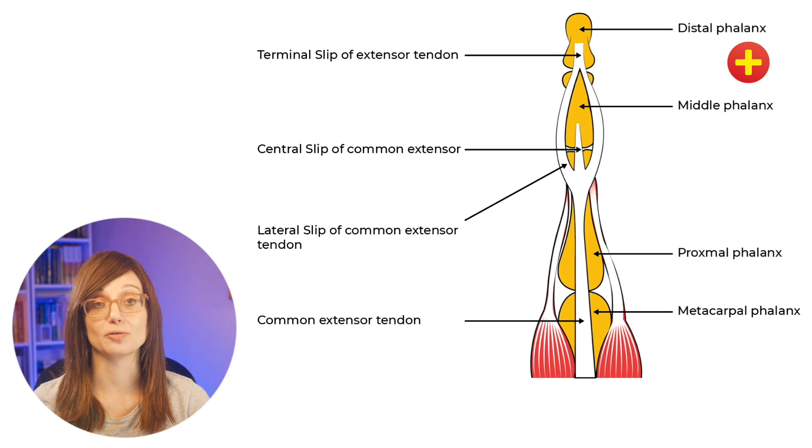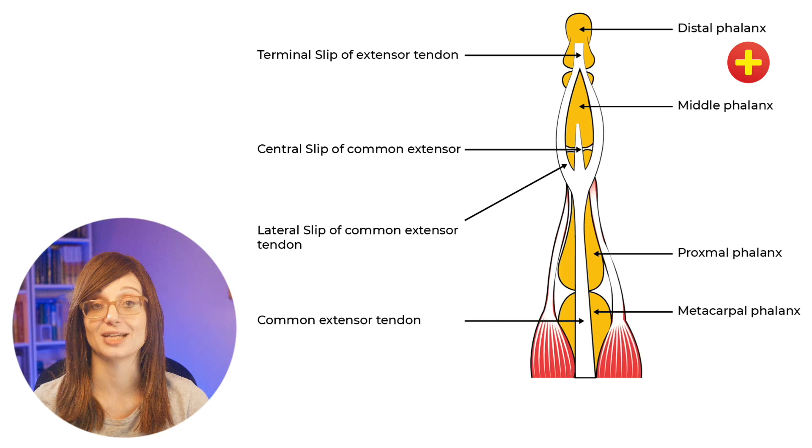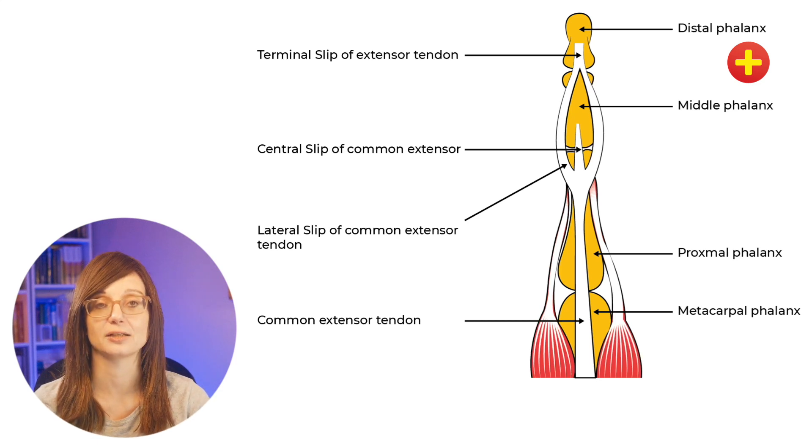The central slip inserts at the base of the middle phalanx and the two lateral bands extend along the radial and ulnar margins of the middle phalanx and they come together at the distal third of the middle phalanx. This forms the terminal extensor tendon and that tendon inserts at the base of the distal phalanx.